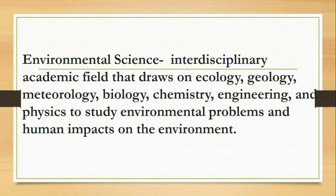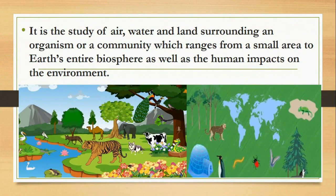For example, humans breathe out carbon dioxide, which plants need for photosynthesis. Plants, on the other hand, produce and release oxygen to the atmosphere, which humans need for respiration. Environmental science is the study of air, water, and land surrounding an organism or a community — ranging from a small area to Earth's entire biosphere — as well as the human impacts on the environment.